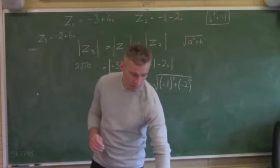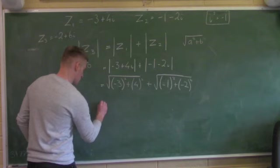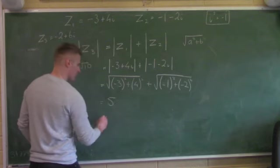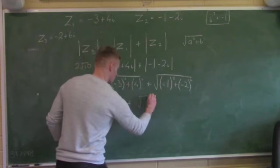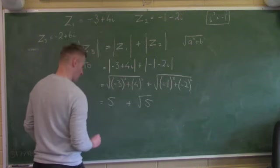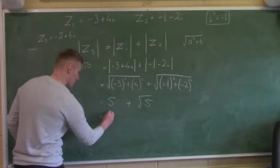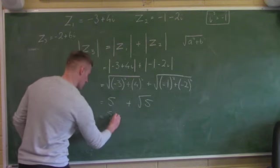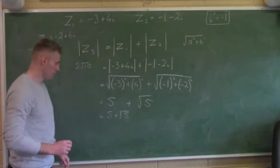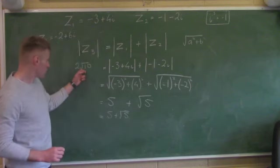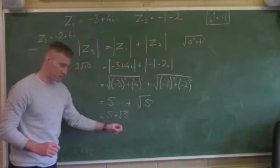After doing the calculator work: the first gives me 5, and the second gives me the square root of 5, which stays in surd form. So 2 root 5 is not equal to 5 plus the square root of 5.